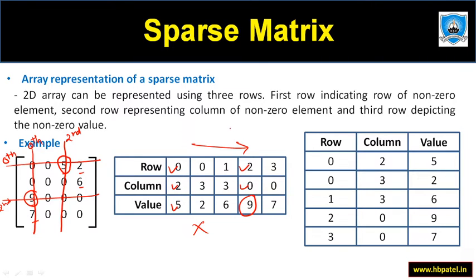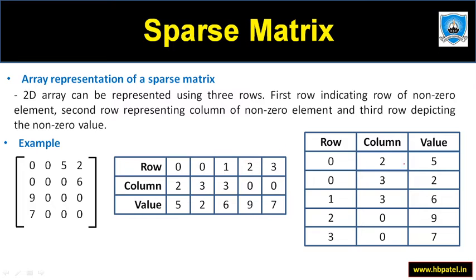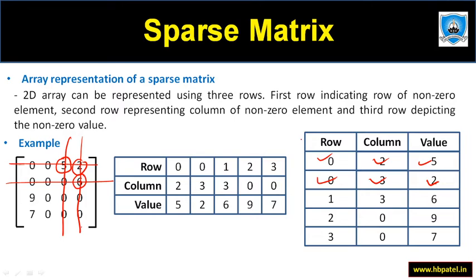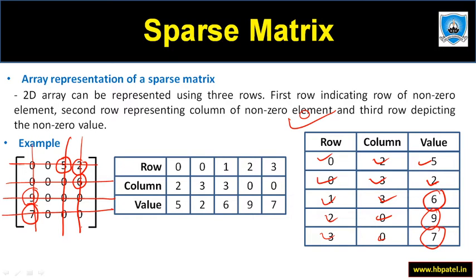The preferred representation: for five — 0th row, 2nd column, element five. For two — 0th row, 3rd column, element two. For six — 1st row, 3rd column, element six. For nine — 2nd row, 0th column, element nine. For seven — 3rd row, 0th column, element seven. So rather than putting all 16 values, we put only five values along with row and column.